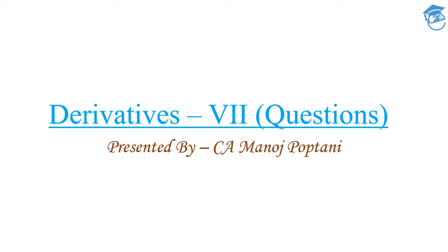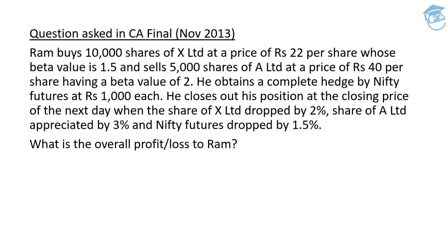So this question was asked in the CA Final examination for May 2012. It says Ram buys 10,000 shares of X Limited at a price of ₹22 per share whose beta value is 1.5, and at the same time he sells 5,000 shares of A Limited at a price of ₹40 per share which has a beta value of 2. He obtains a complete hedge by Nifty futures at ₹1,000 each. He closes out his position at the next day's closing price when the share of X Limited dropped by 2%, share of A Limited appreciated by 3%, and Nifty futures dropped by 1.5%.